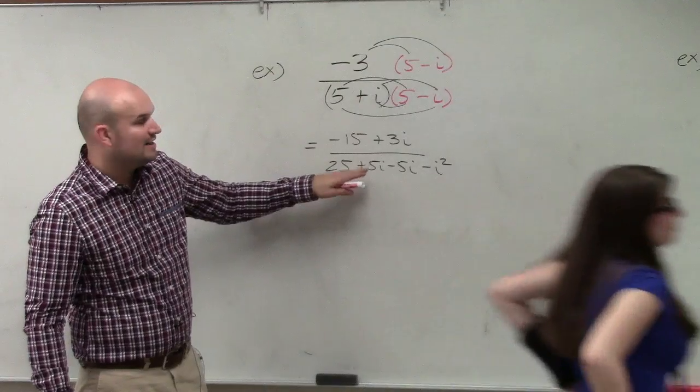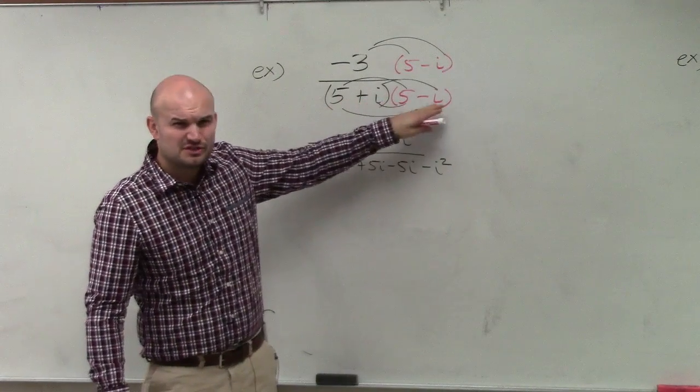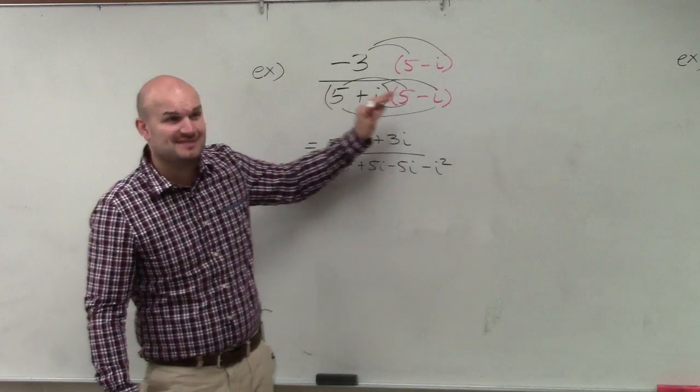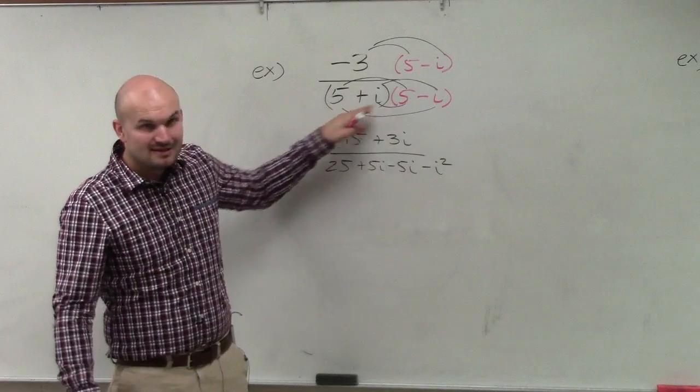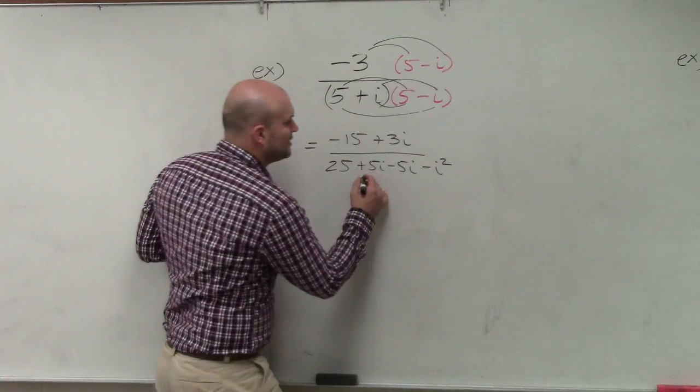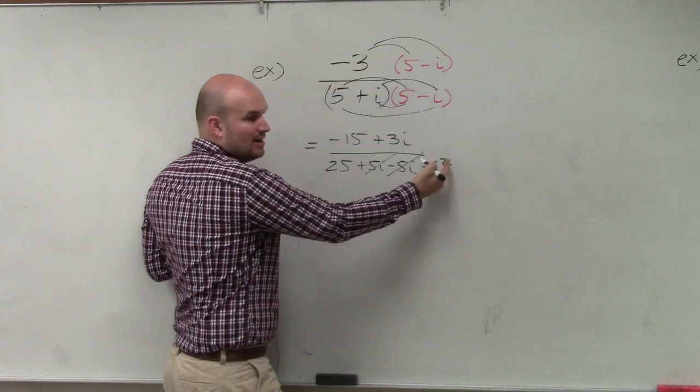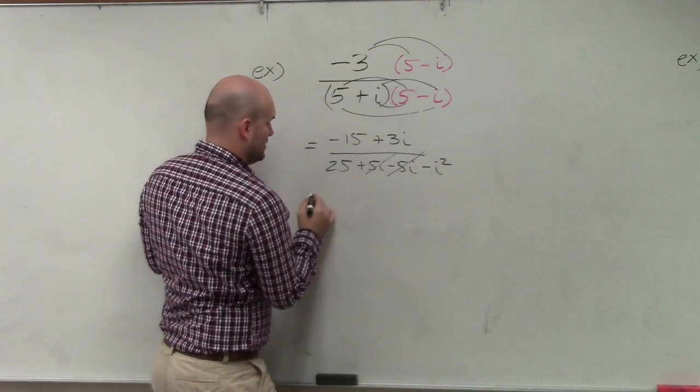So now we can go ahead and simplify this. Do you guys remember difference of two squares? Before you take your test, make sure you remember how to factor using difference of two squares. This is a product representing difference of two squares. Our middle terms add to 0, so i squared goes to negative 1 minus a negative 1 is positive 1.